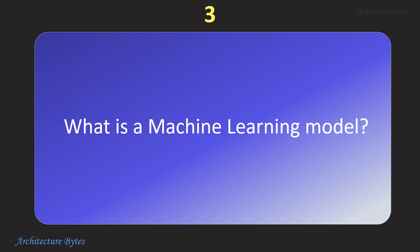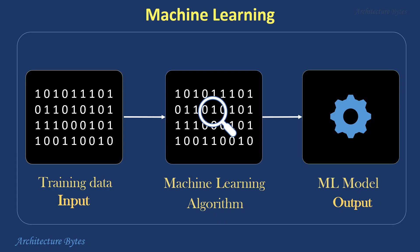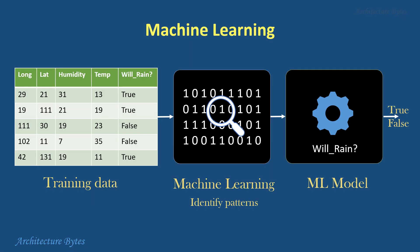What is a machine learning model? In the machine learning world, you feed historical data to a machine learning process. It examines it to find patterns using various algorithms and outputs a machine learning model. So a ML model is simply a program that has been trained to recognize certain types of patterns. Here is a concrete example: our training data is a large dataset with features like longitude, latitude, humidity, temperature, and whether it will rain or not. This data might be of the last many years, therefore useful for training our model. Our machine learning process learns from this data.